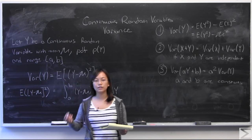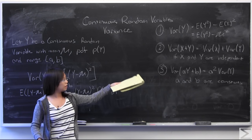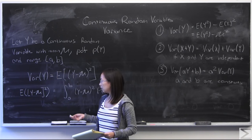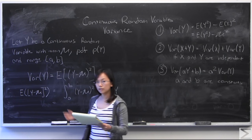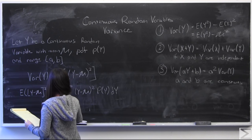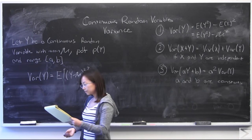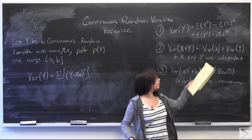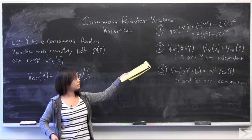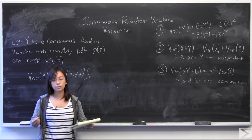There are other ways of calculating the variance, and that's what I'm going to go over by proving these three properties of variance. I will be using the definition of variance and some properties of expectation value to do so. Number one says that the variance of y is equal to the expectation of y squared minus the expectation of y, quantity squared.